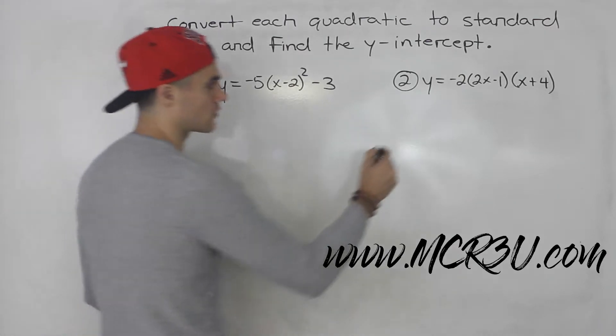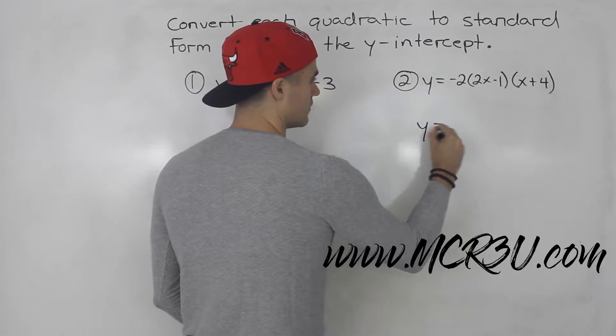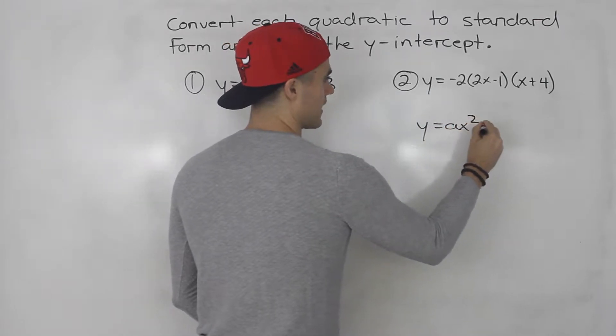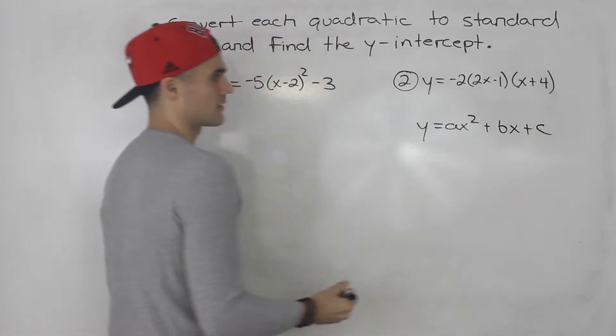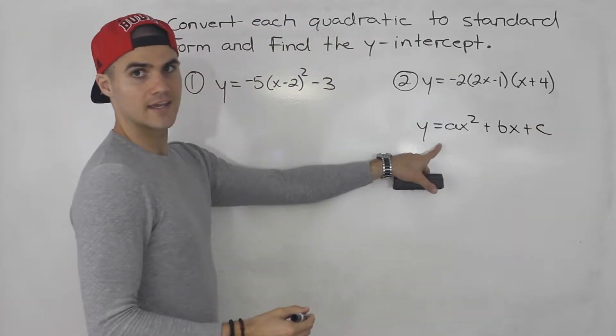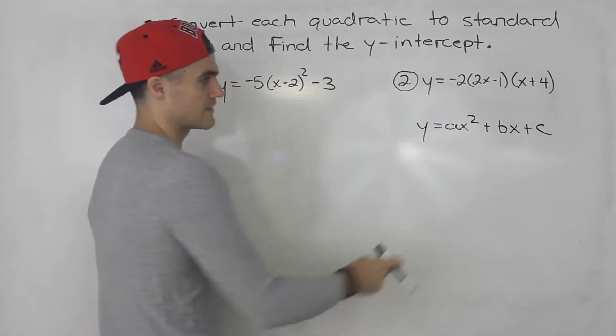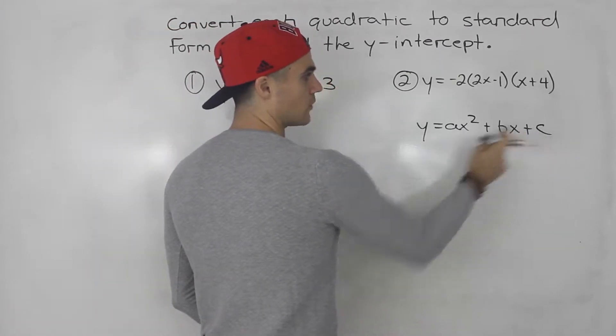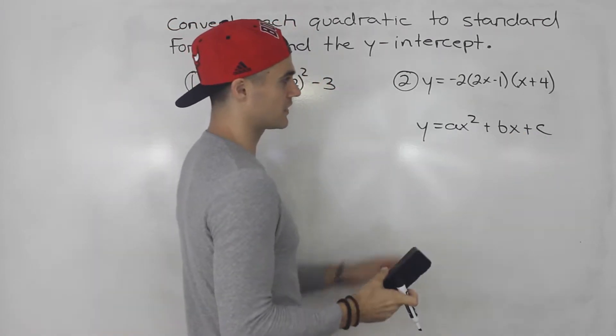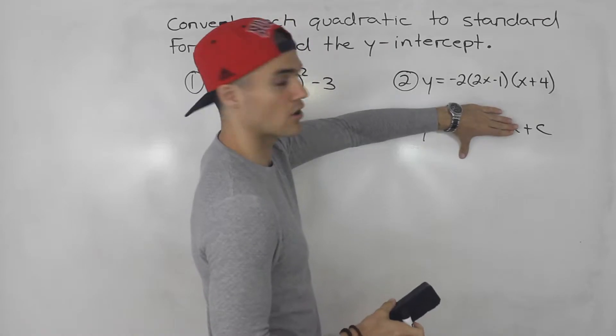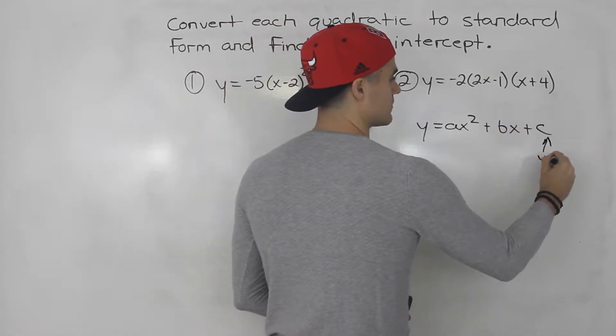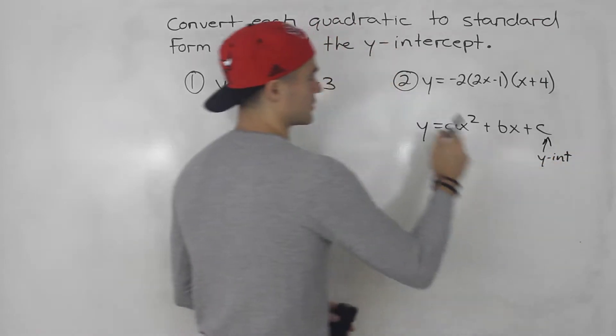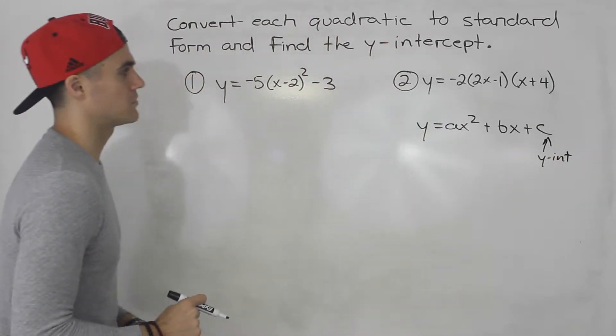Now standard form for a quadratic, if you remember, it's y equals ax squared plus bx plus c. And if a quadratic is in standard form then the c value is always the y-intercept because if you plug in zero for the x's all you're left with is the c. So getting the y-intercept after we convert to standard form is going to be pretty easy.